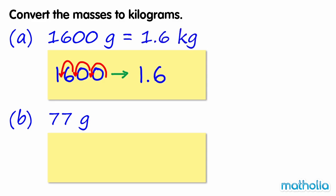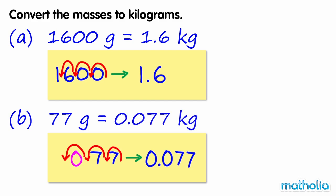B: 77 grams. Shifting the decimal point three places to the left gives us 0.077. So 77 grams equals 0.077 kilograms.